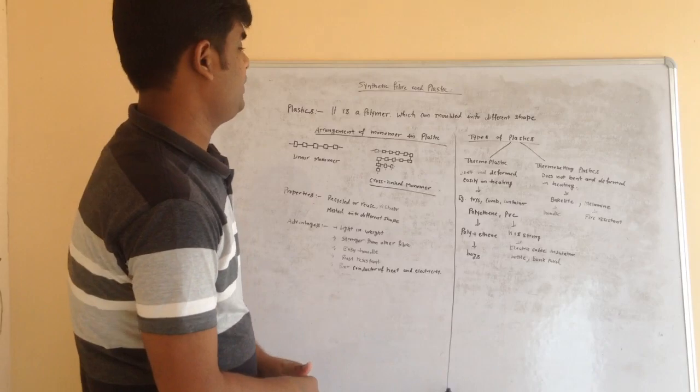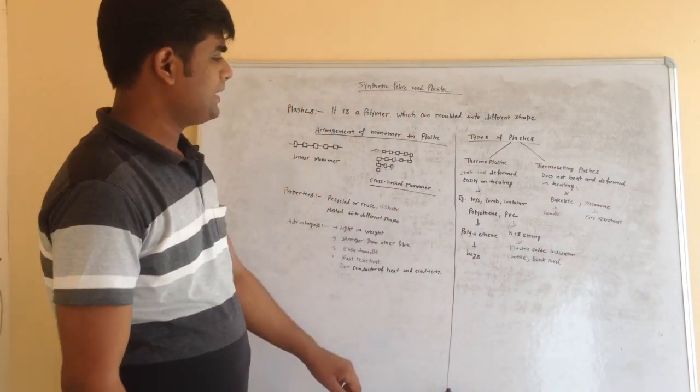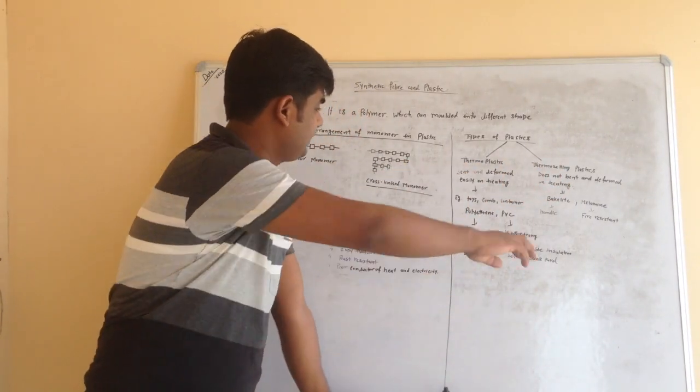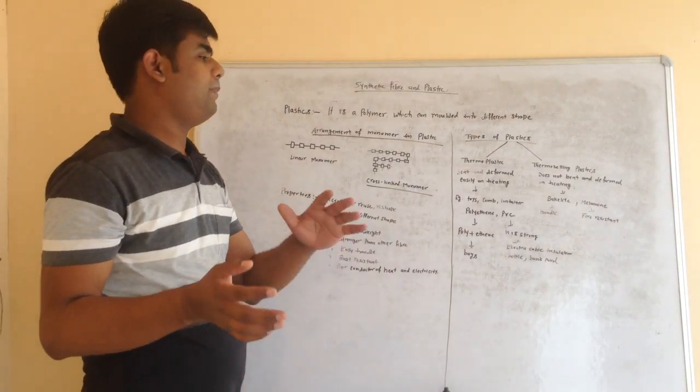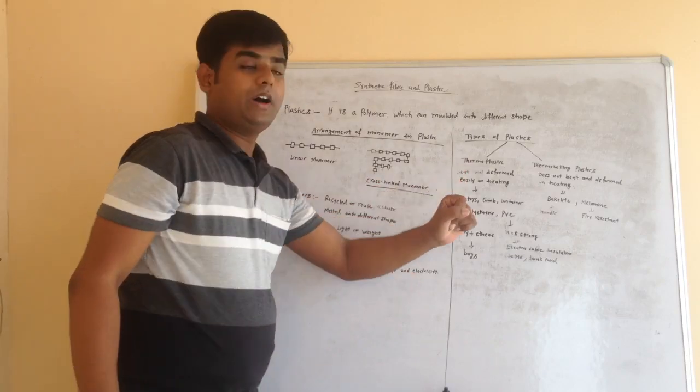Now next is type of plastic. Basically there are two types of plastic: thermoplastic and thermosetting plastic. Thermoplastic is the type of plastic which can bend easily and deform on heating.